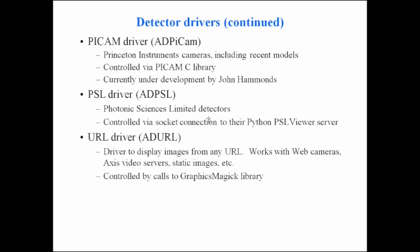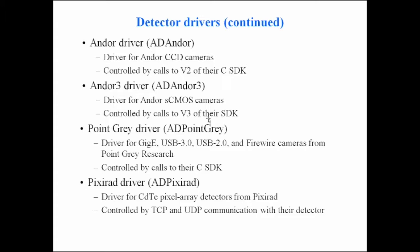There's a URL driver that lets you get images from any URL — it works with web cameras, access video servers, and static images (you could point it to a disk file being updated by something). This is all done by calls to the GraphicsMagick library, a popular open-source imaging library for Linux and Windows.